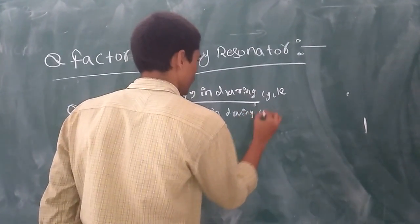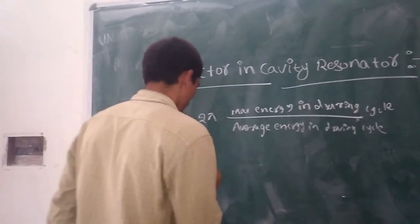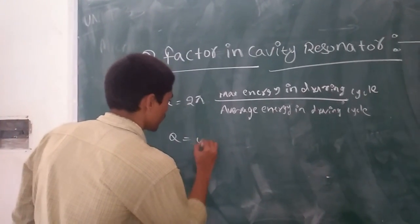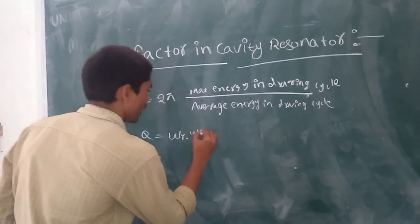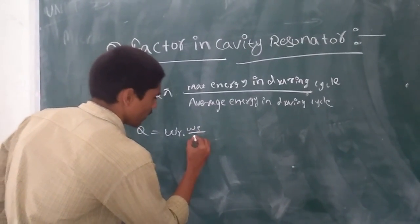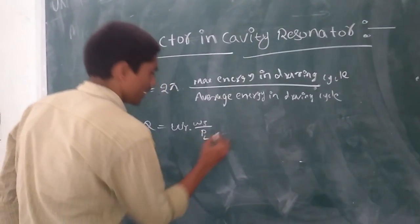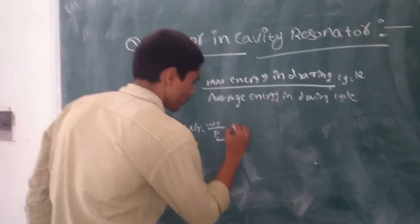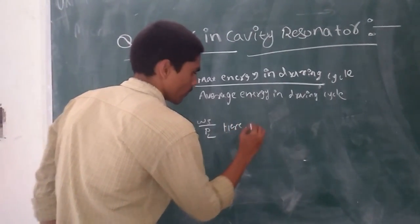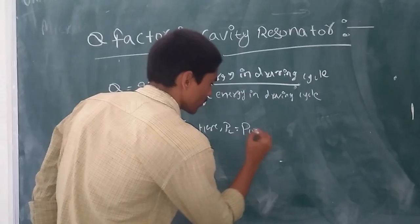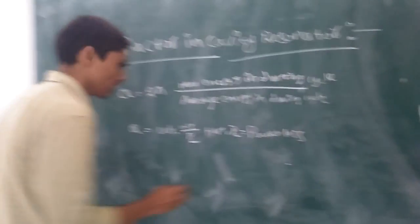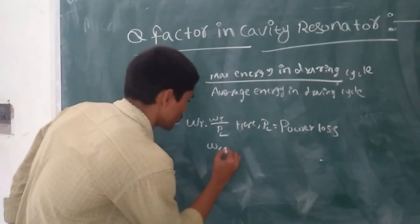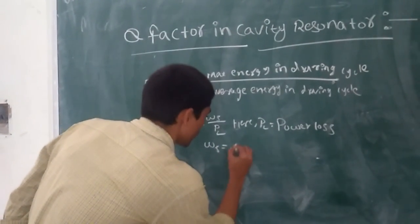Q equals omega r into omega s divided by PL. Here, PL equals to power loss, and omega s is equal to maximum energy stored.